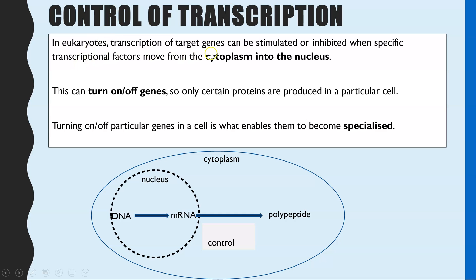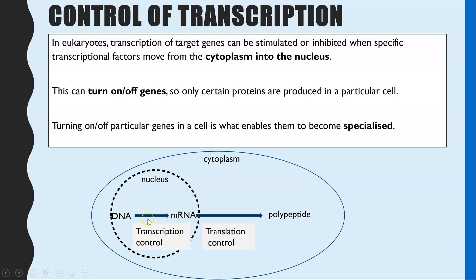In eukaryotic cells, transcription of target genes can be stimulated or inhibited when there are certain molecules, which we call transcriptional factors, which move from the cytoplasm into the nucleus. They can either initiate or inhibit transcription — we often call this turning on or turning off genes. It's in this way that cells become specialised, because certain genes are switched on and off to create the proteins required to make a specialised cell. This video covers transcriptional control — the control of DNA to mRNA — so controlling whether transcription occurs or not.